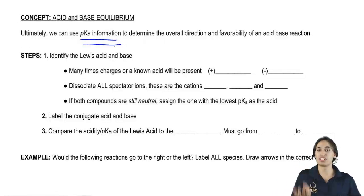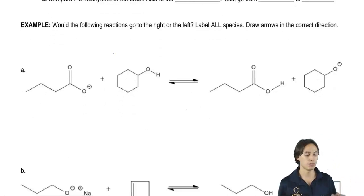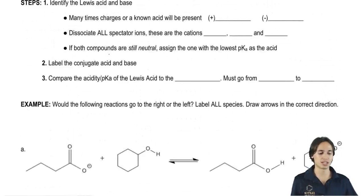Basically, I'm just going to give you an example. Here's a common question that you could see on an exam. Would the following reaction go to the left or would it go to the right? Label all the species, draw the correct arrows. There's a lot in there and there's a lot that you have to understand. So let's go ahead and break it down one step at a time.